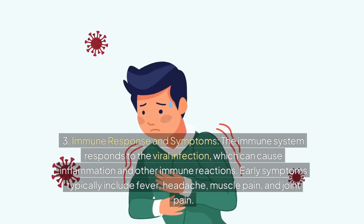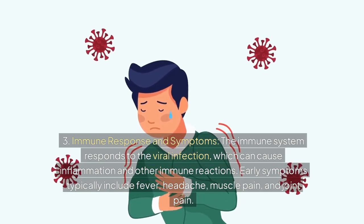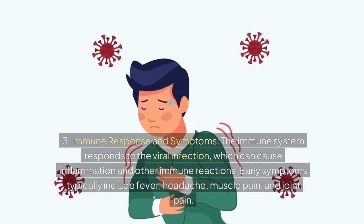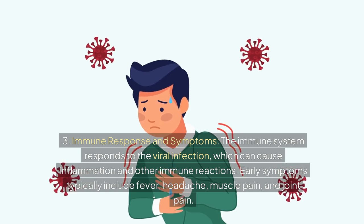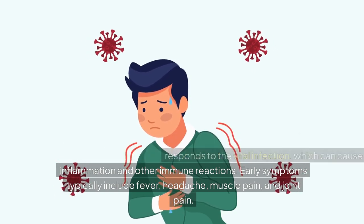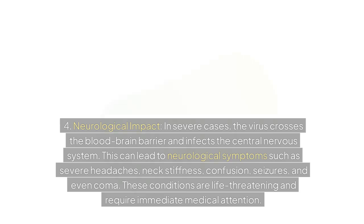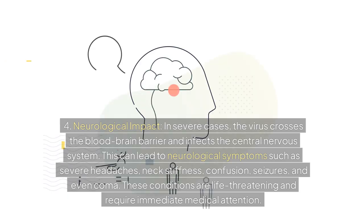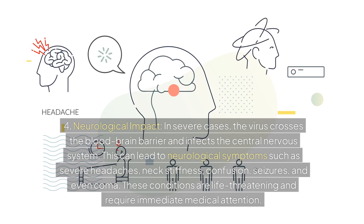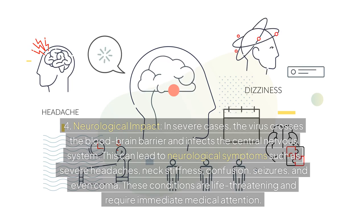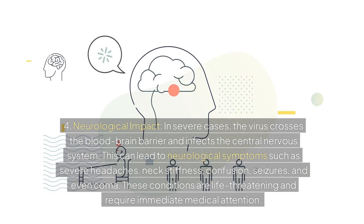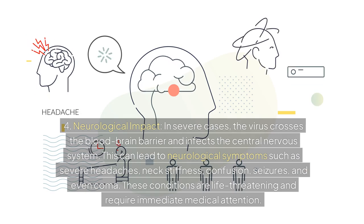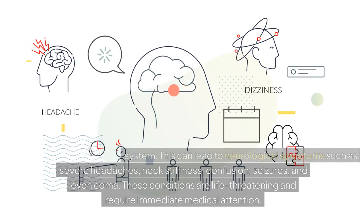Third, immune response and symptoms: the immune system responds to the viral infection, which can cause inflammation and other immune reactions. Early symptoms typically include fever, headache, muscle pain, and joint pain. Fourth, neurological impact: in severe cases, the virus crosses the blood-brain barrier and infects the central nervous system. This can lead to neurological symptoms such as severe headaches, neck stiffness, confusion, seizures, and even coma. These conditions are life-threatening and require immediate medical attention.